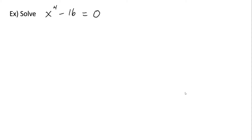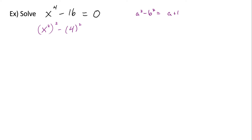Here's one example. Let's say we want to solve the equation x to the fourth minus 16 equals zero. We might notice that this is in quadratic form — we could express this as x squared squared minus four squared. Now we have a difference of perfect squares. Remember, a squared minus b squared is factorable into a plus b times a minus b, and that's how we're going to factor this.